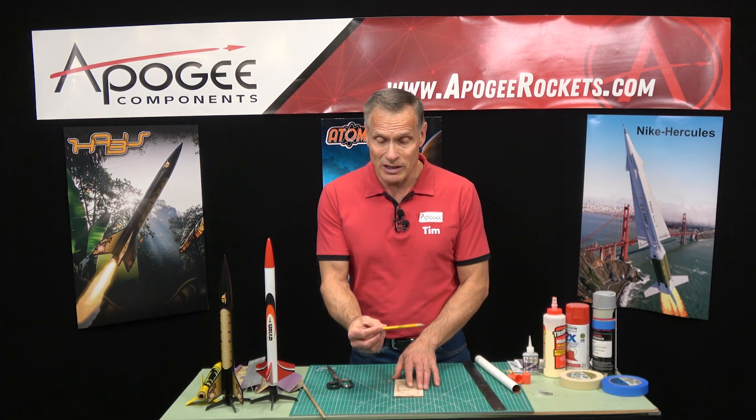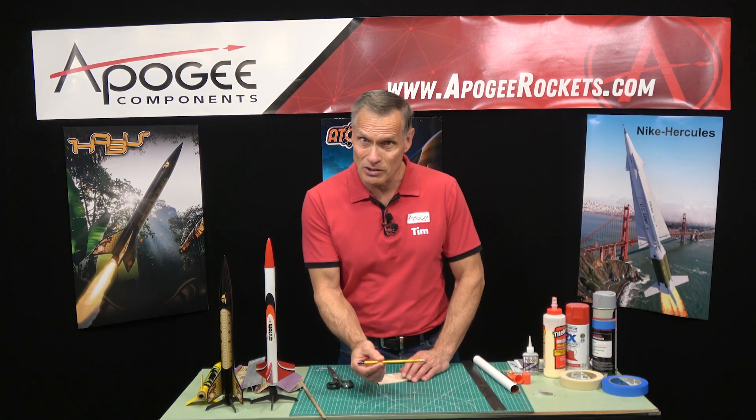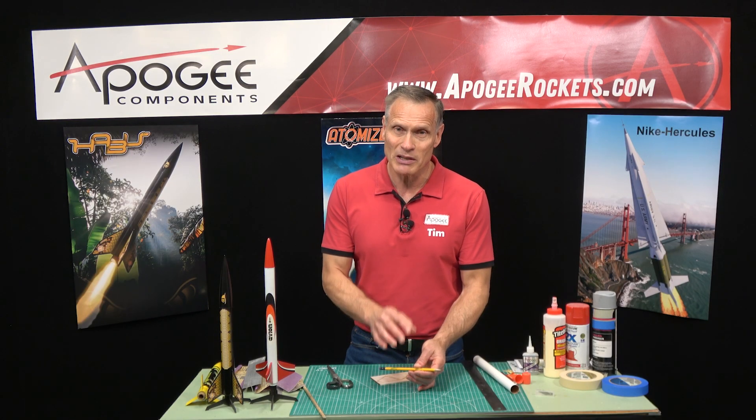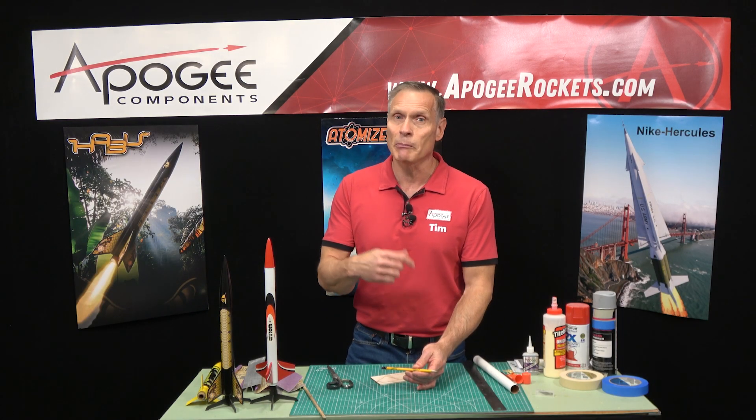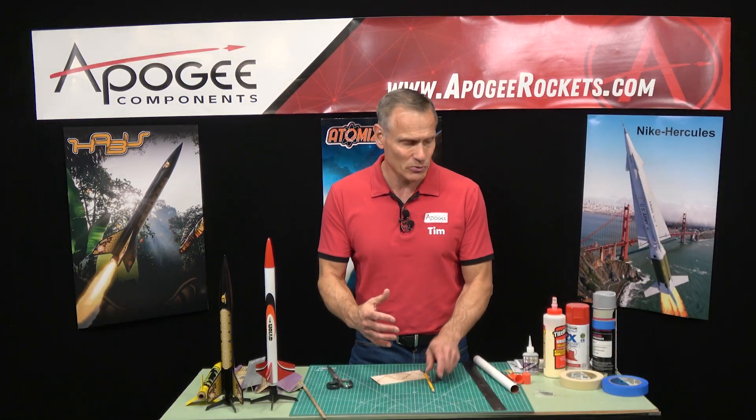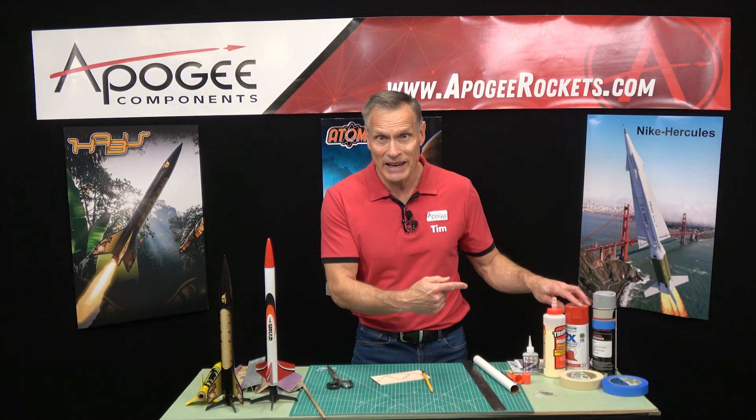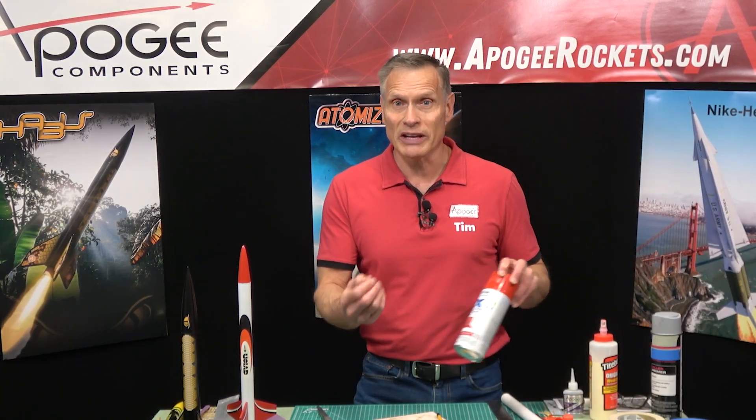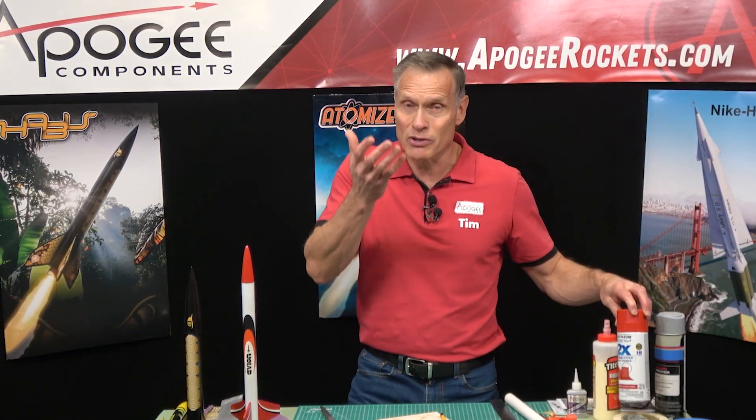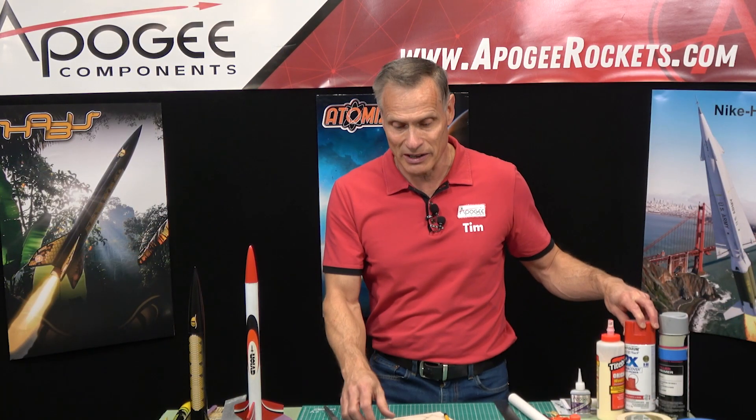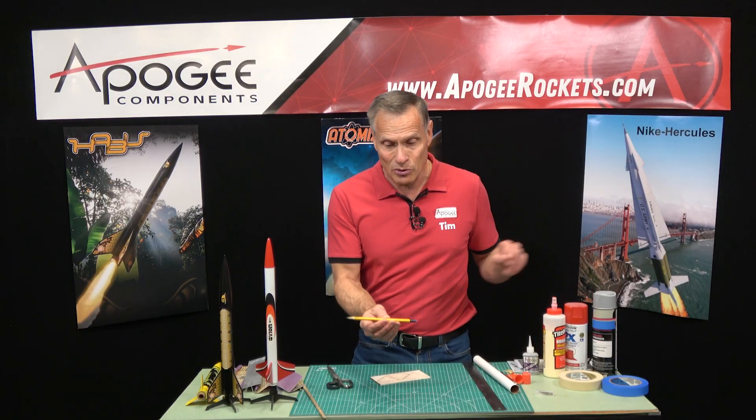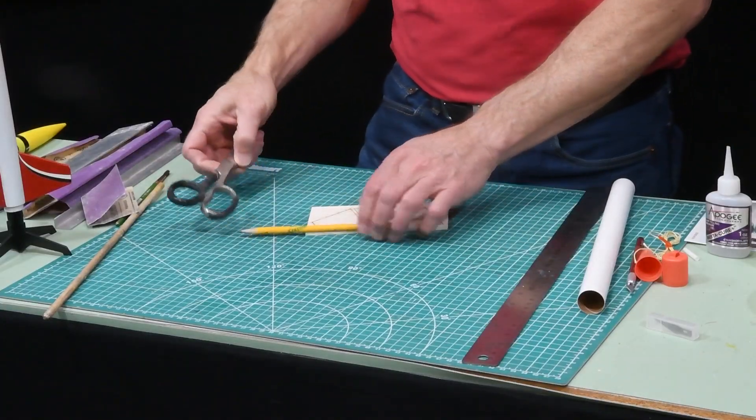And when you are marking things we recommend using a pencil, not a pen but a pencil. And the reason we recommend the pencil is the ink in a pen can be dissolved with solvent. And where are the solvents? Well there's a lot of solvents in paint. So the paint will dissolve the ink and then the ink floats up to the surface and it ruins your paint. You don't get that with a pencil. So we always recommend using a pencil whenever possible.